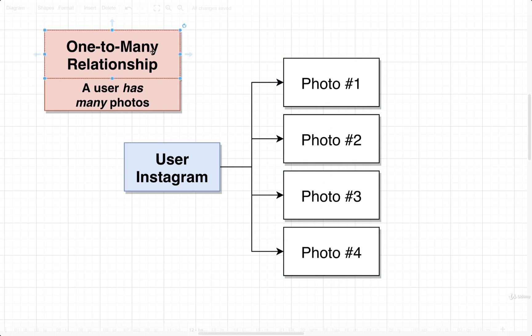We refer to this as a one-to-many relationship because one user has many photos that are tied to them. So besides calling this a one-to-many relationship, in practical everyday language as you're talking to another engineer, rather than saying one-to-many, you might instead say a user has many photos. Anytime you see the words 'has many', that is a sign of a one-to-many relationship.